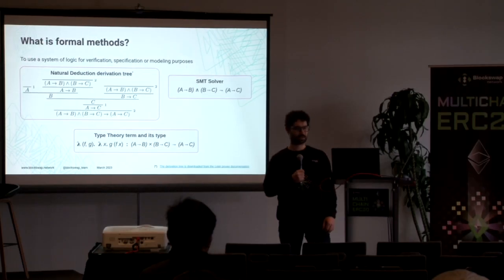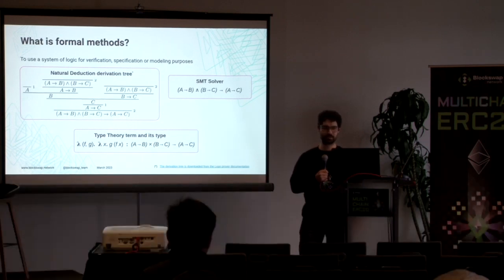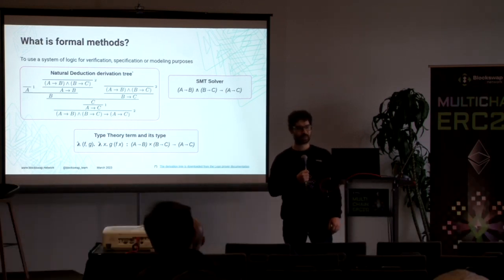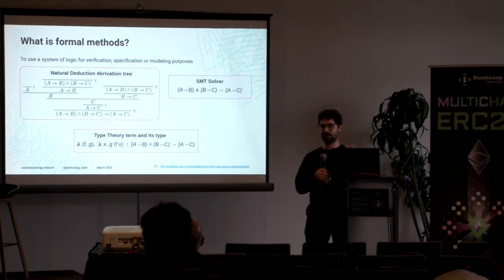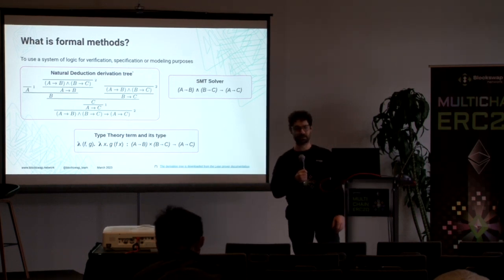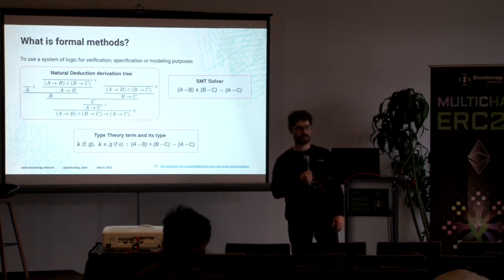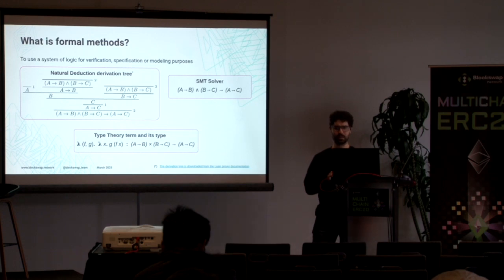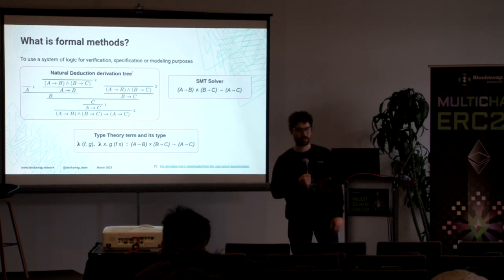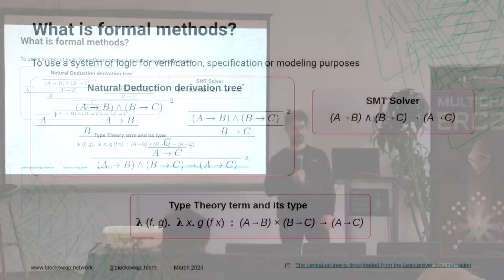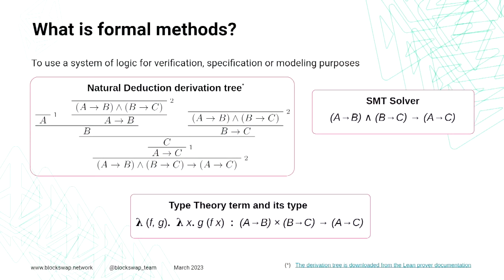Another approach is a more automated one, for example SMT solvers. In SMT solvers we just state the conclusion we want the solver to prove for us, and the job of the SMT solver is to generate a proof of that conclusion. This problem is known to be undecidable, so there will be some problems the solver cannot answer yes or no on, but in practice they tend to work quite well because the inputs we give them are typically not too difficult.